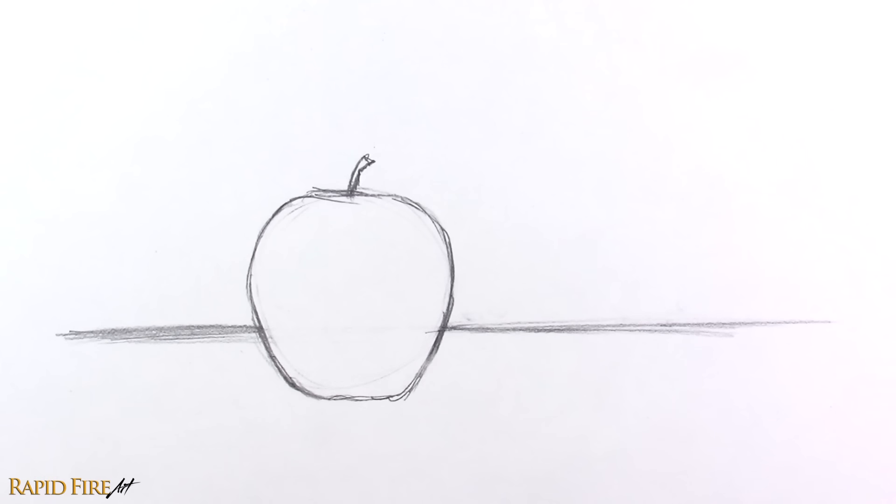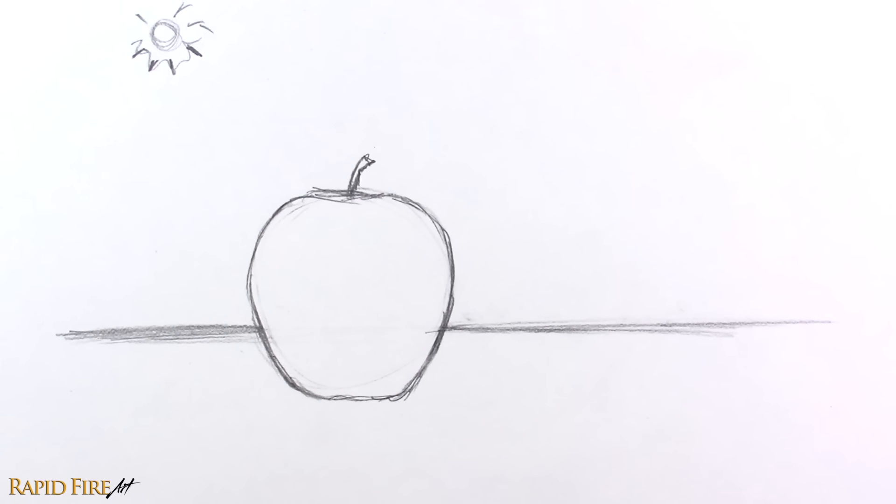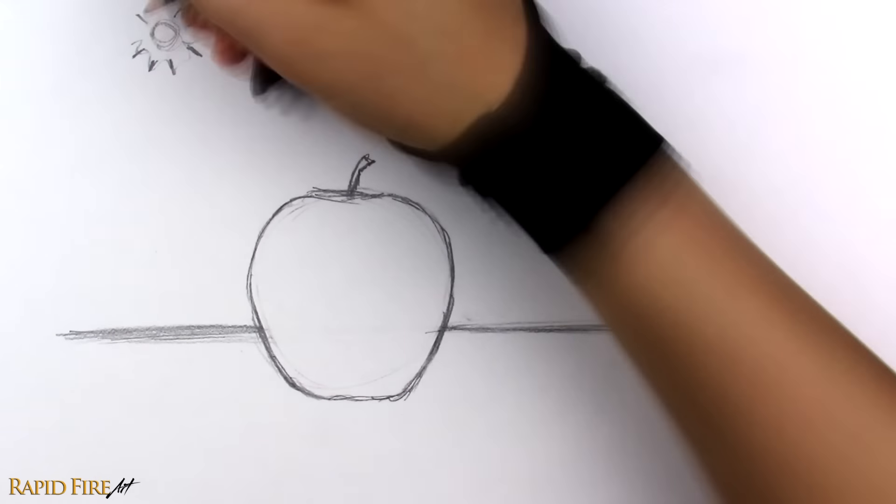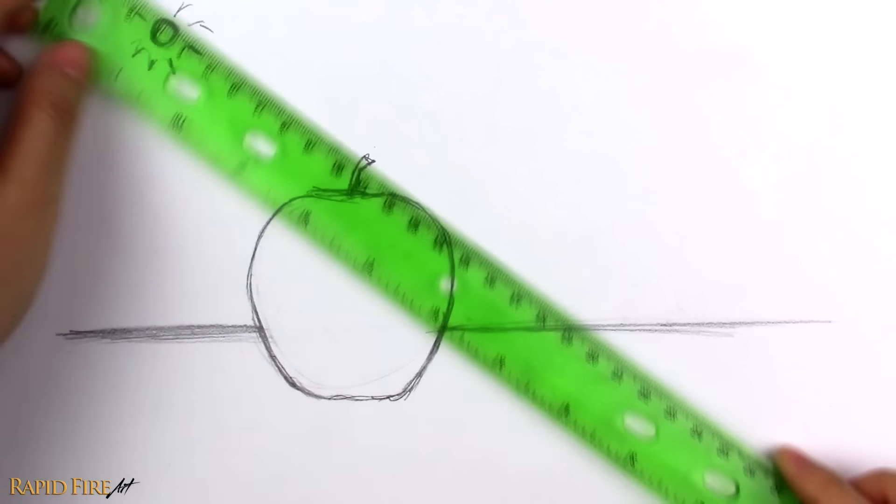The next step is to determine where the light is coming from. Let's have one shining down from the top left. Draw a little flashlight or sun just to remember where it is. Where the apple blocks light from reaching the table, let's draw a cast shadow.